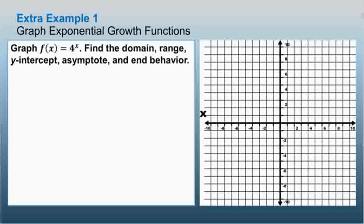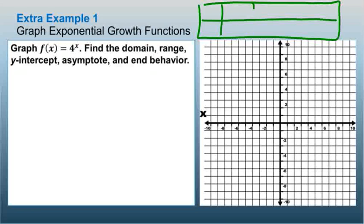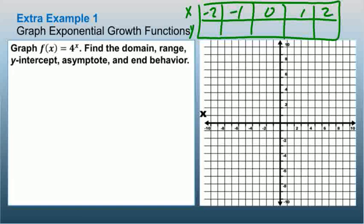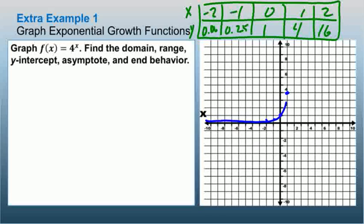Next example: graph f(x) = 4^x and create a table. Using x values of negative 2, negative 1, 0, 1, and 2: 4 to the negative 2nd power is 1/16, which is 0.0625; 4 to the negative 1st power is 0.25; 4 to the 0 power is 1; 4 to the 1st power is 4; and 4 to the 2nd power is 16. Plotting these points, 2 gives us 16 which is way up high, so the graph comes along slowly then jumps up fairly quickly.